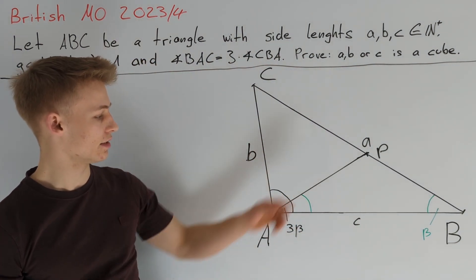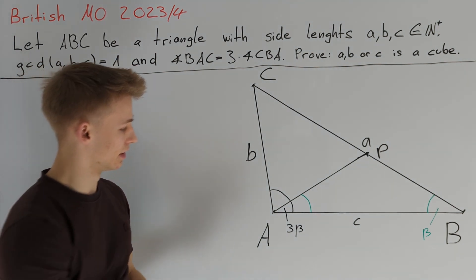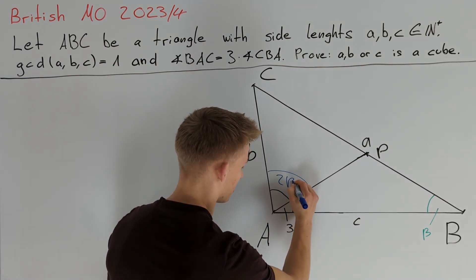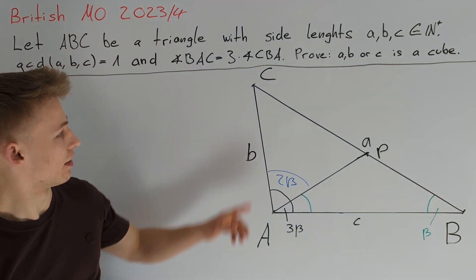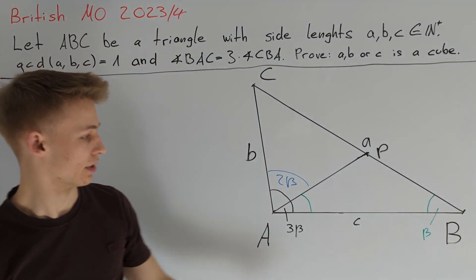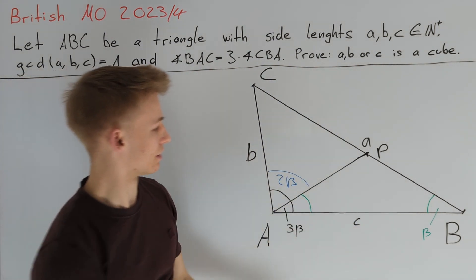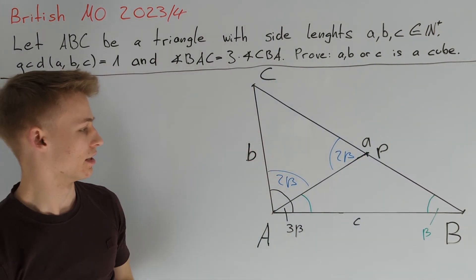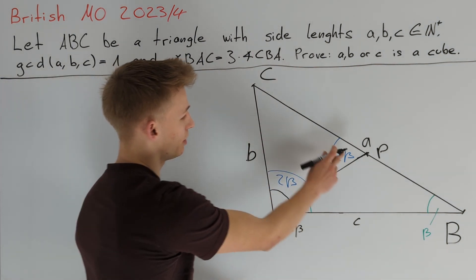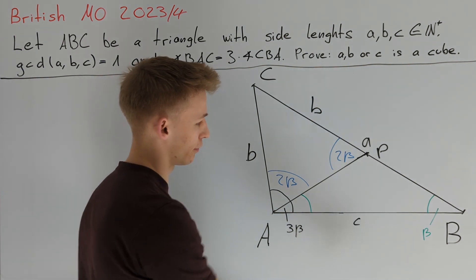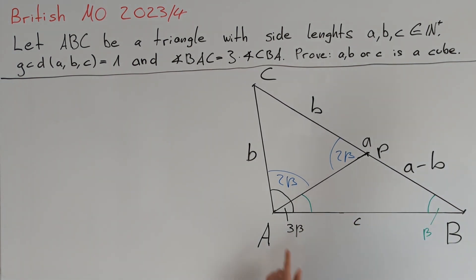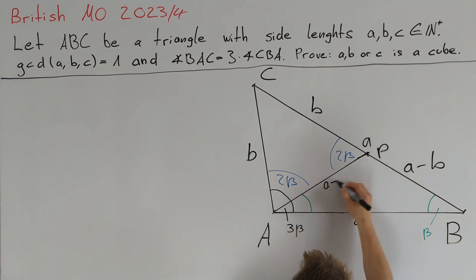We can calculate a few more angles in this picture. We know that angle PAC is equal to 2 times beta, and angle CPA is equal to this angle plus this angle, so it is also equal to 2 times beta. Therefore we have another isosceles triangle, giving us that CP is also equal to b, and therefore PB equals a minus b. Since triangle ABP is also isosceles, we get that AP is also equal to a minus b.